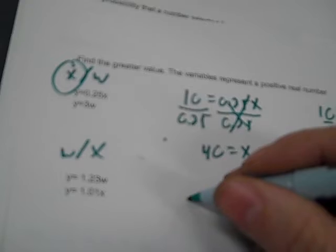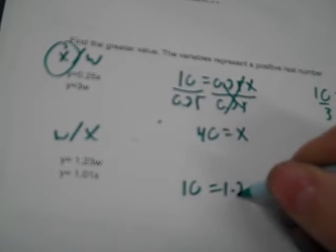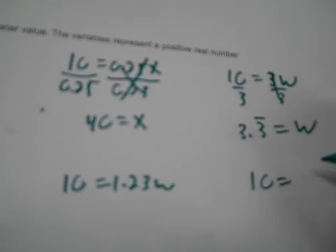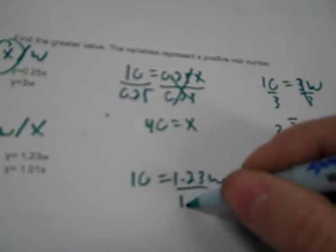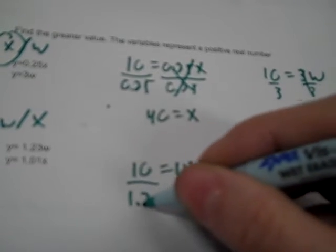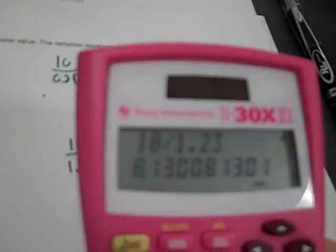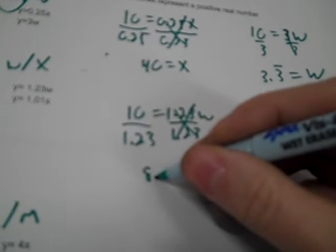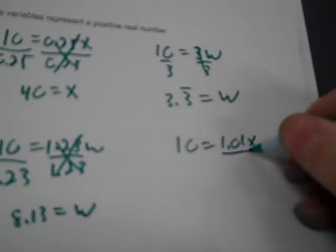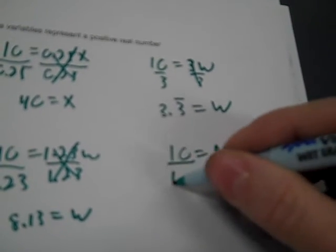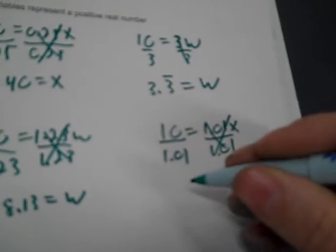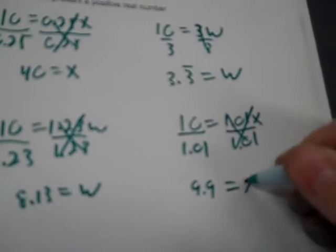Again, let's replace each Y with a number. Let's go 10 again. And then, I solve each equation by dividing. So 10 divided by 1.23, 8.13 equals W. And over here, I divide by 1.01. And 10 divided by 1.01 is 9.9, 9.90. Well, obviously, X, again, is the higher value. So, X is it.